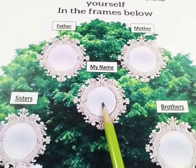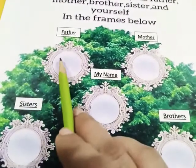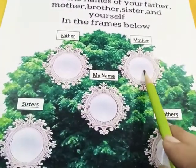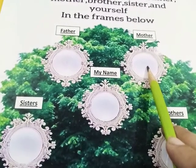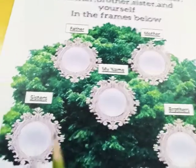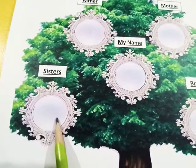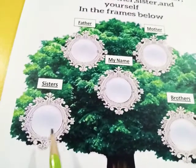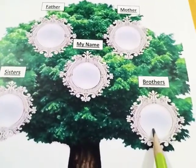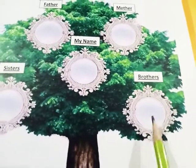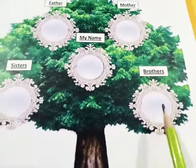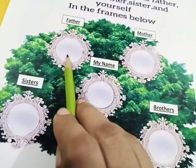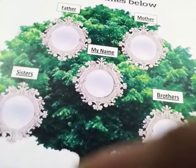Here you have to write your name. Here you have to write father's name. Here you have to write mother's name. Here you have to write sister's name — if you have any sister, write it here; if you don't have, then leave. If you have any brother, write here; if you don't have, then leave. Write your brother's name here, your sister's name here, your name here, father's name, mother's name. I hope you all understand it.